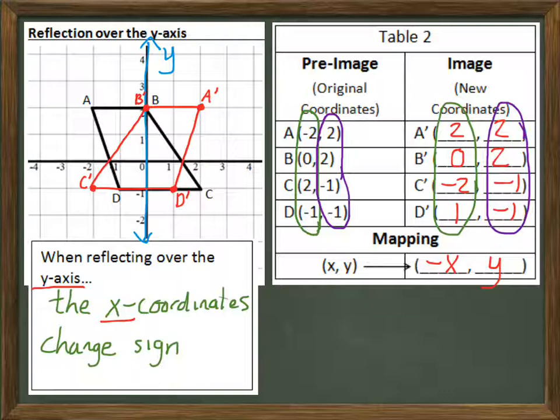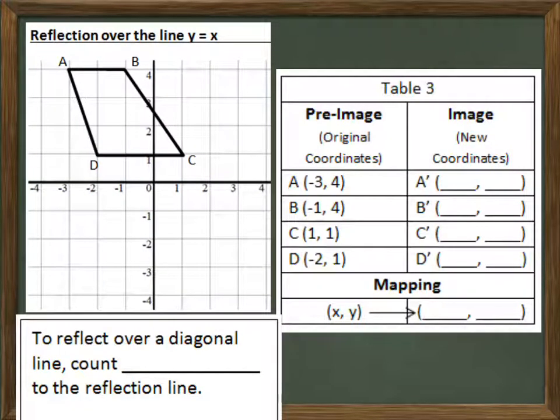I want to point out again. Remember, there's this opposite relationship here. When you're reflecting over the y axis, the x coordinates change sign. So, let's do one more type of reflection you may not have done before, which is reflection over diagonal line. In this case, we're going to reflect over the line y equals x. This has a special name because it's used quite a bit in algebra. It's called the inverse.